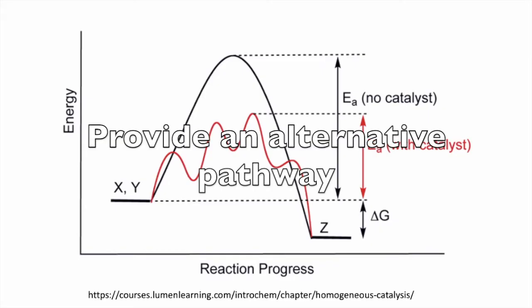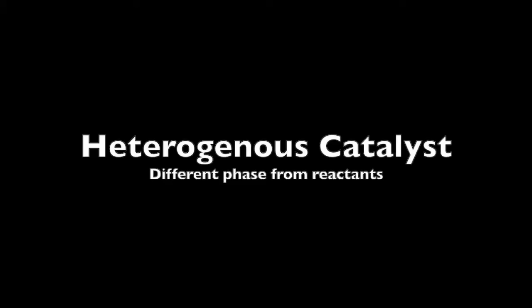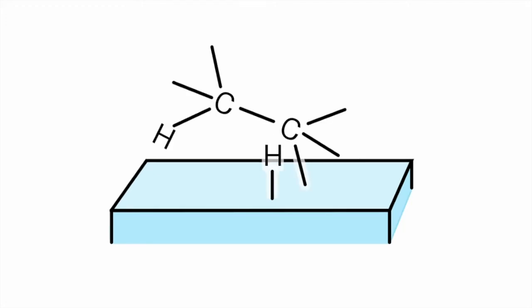A heterogeneous catalyst is a catalyst that's in a different phase from the reactants. For example, you may have an aqueous solution with your reactants in it and the catalyst could be a solid. These catalysts speed up reactions by changing the orientation of the molecules so that the correct sides of the molecules can collide, and this leads to more effective collisions.